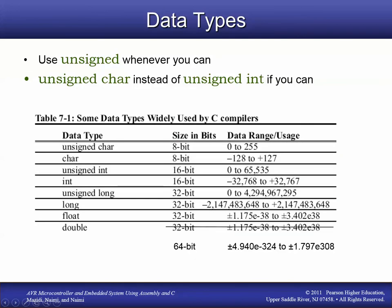This slide shows the different data types available, along with some tips. Use unsigned whenever possible — for example, if you have a counter that will never go negative, use an unsigned variable. Use the smallest data type you can to preserve memory and make operations faster. You can use a char instead of an int if you don't need to count above 255.